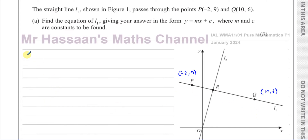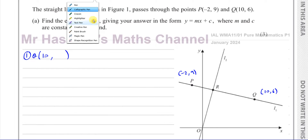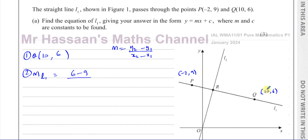To find the equation of a straight line we need two bits of information: a point the line passes through, and the gradient. We'll choose point Q(10, 6) to avoid negative signs. The gradient formula is y2 minus y1 over x2 minus x1. Starting with Q, we get 6 minus 9 over 10 minus minus 2.